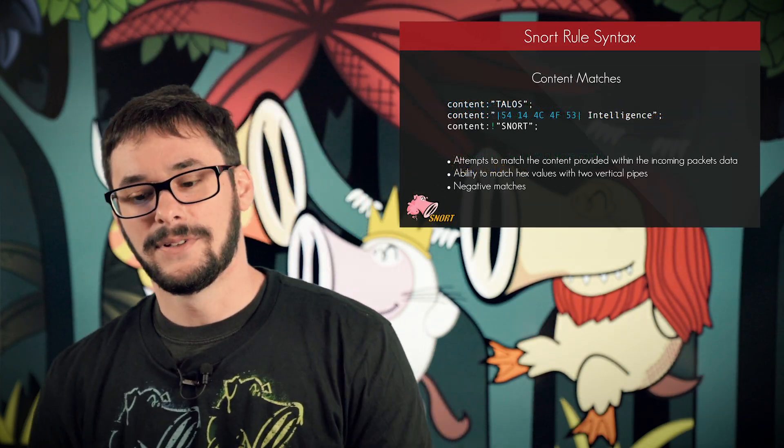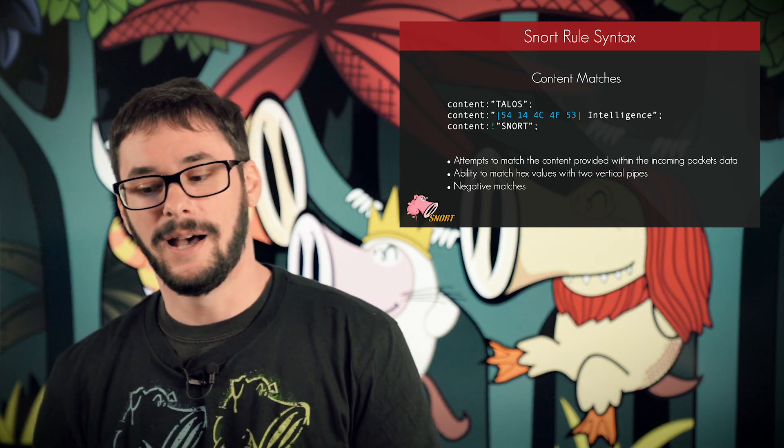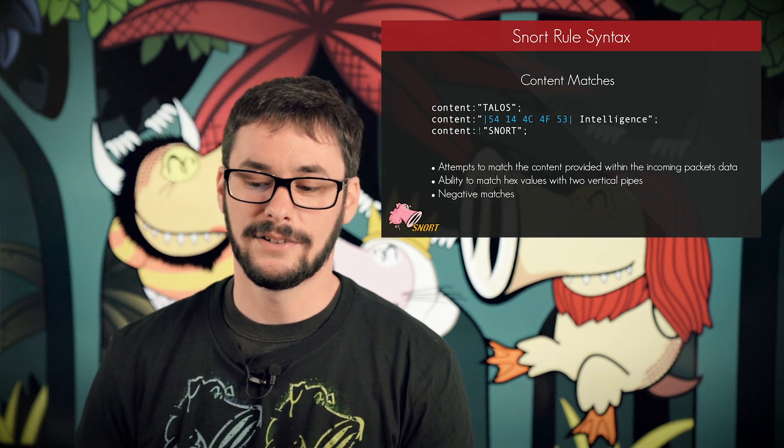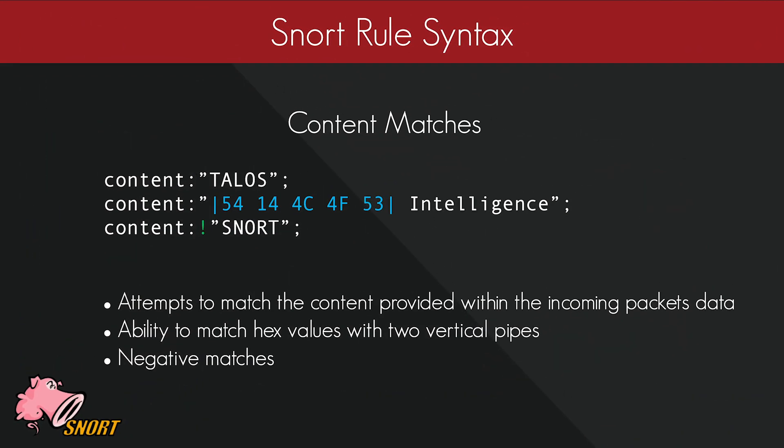The most important option to learn is the content rule option. It's the most used option and the base of pretty much all Snort detection. There are a couple ways to write a content match. You can match the word 'talos' as a string anywhere within the incoming bytes of the packet. You can match an ASCII string, a string of hex bytes, or you can have a negative match. In the third example, you can see an exclamation point followed by the string 'snort' — the exclamation point shows that this is a negative content match.